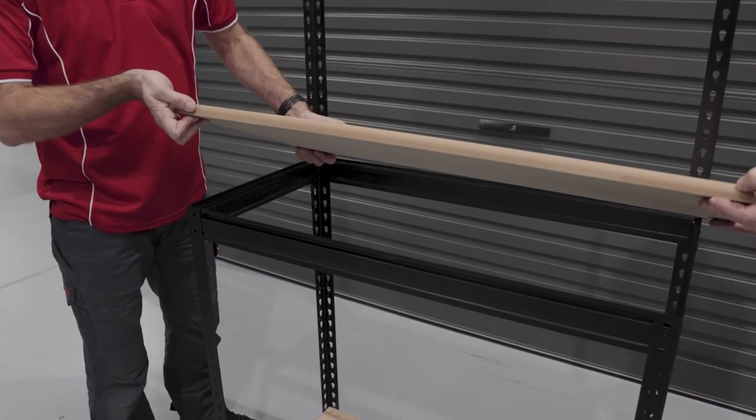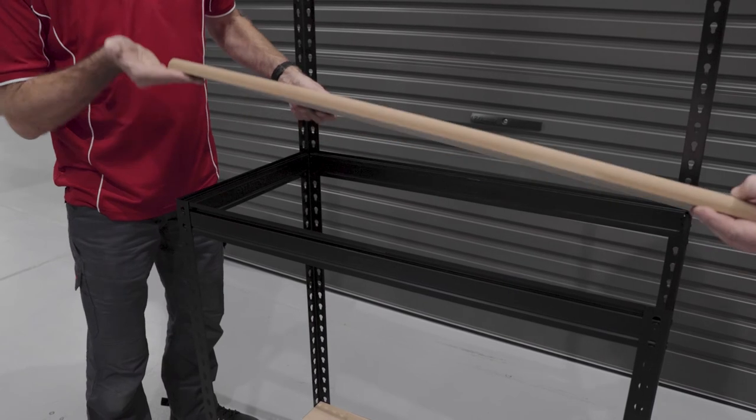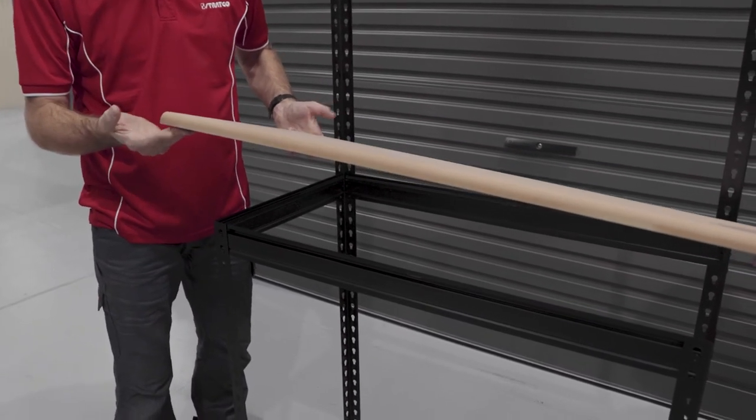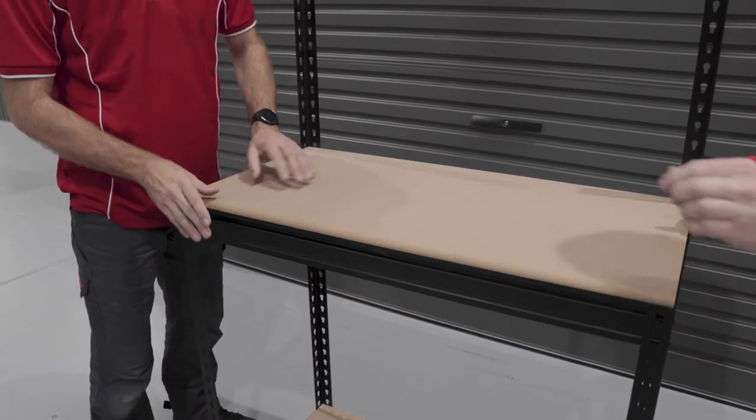You'll notice the top shelf's got a beveled edge on the front for safety and comfort. And you'll also notice that the top shelf is about twice the thickness of the bottom one, which is our workbench. And that'll fit in nicely into the frame.